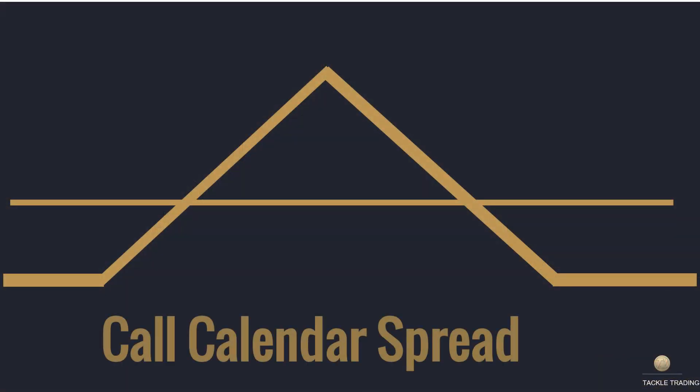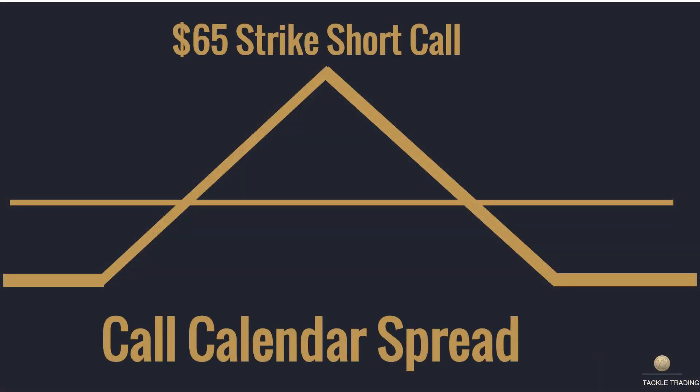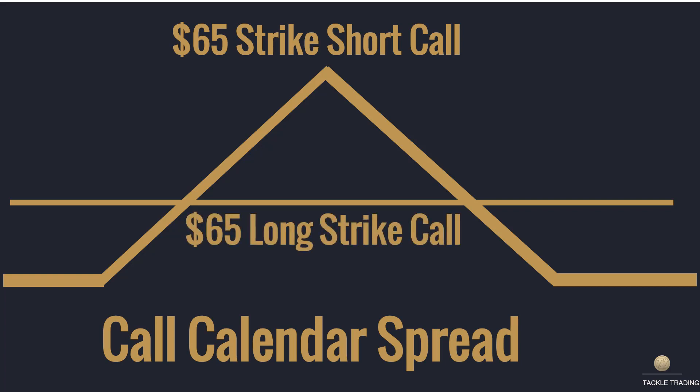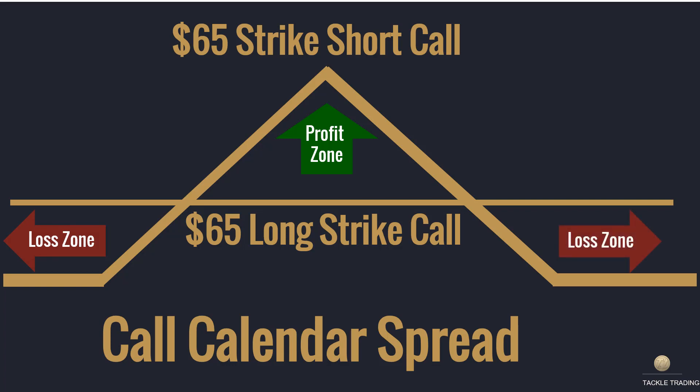The risk profile on a call calendar spread looks like this. If you have a 65 strike short call option, you'll then buy the 65 strike long call option. The profit zone is in the middle of the chart. Your loss is if the chart goes too far down or if the chart goes too far up, creating a neutral cash flow volatility positive position.